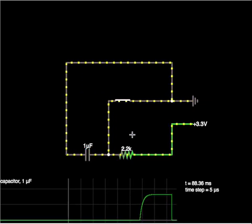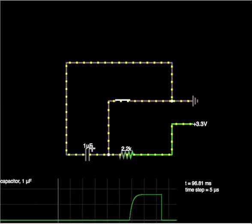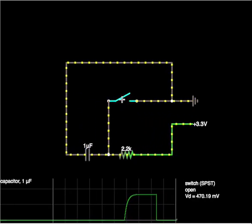Closing the switch again causes the capacitor to discharge and drop back down to zero volts, and you can see this happening on the graph at the bottom.